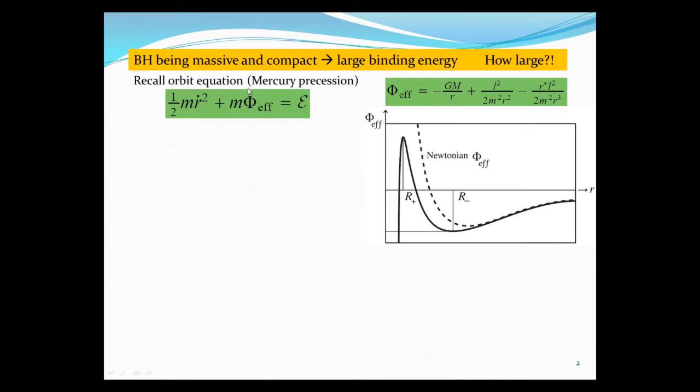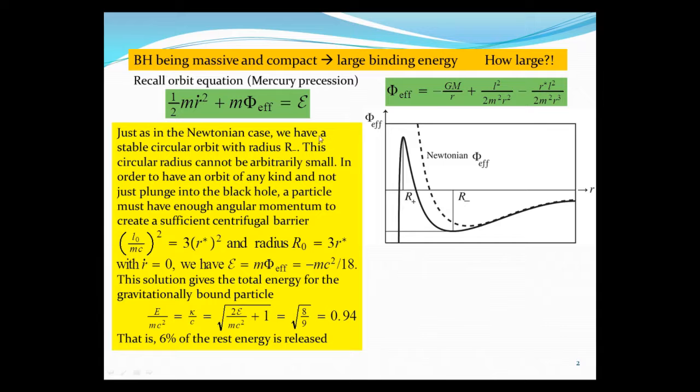Recall the orbit equation when we talk about Mercury precessions for an object with mass: radial rotation of kinetic energy and effective potential which involves gravitational potential and the orbital rotation of kinetic energy and the GR correction term. Now, Newtonian is just without this term.